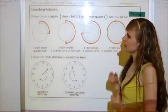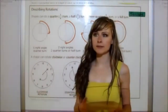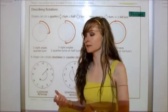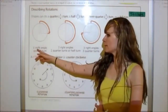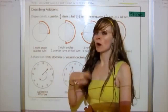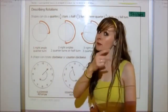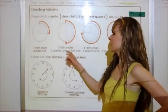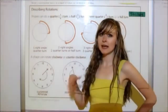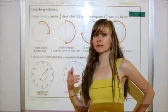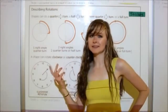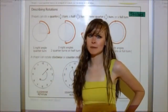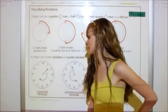You'll notice that turns are described in quarters because that's the way it makes sense when you draw a shape once it turns. A quarter turn is one right angle. Two right angles is a half turn. Three right angles is a three-quarter turn. And four right angles is a full turn — though that one's easier to remember since the shape is back in the same position as it started.